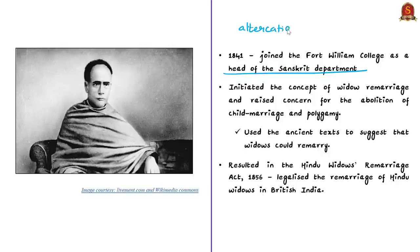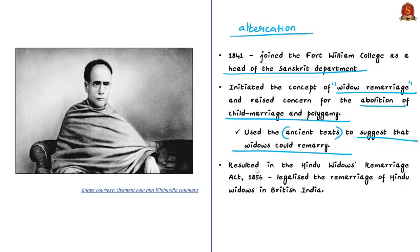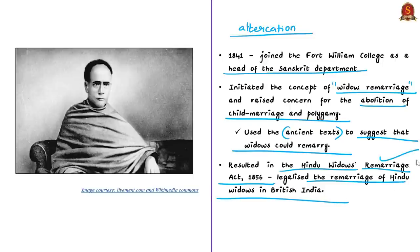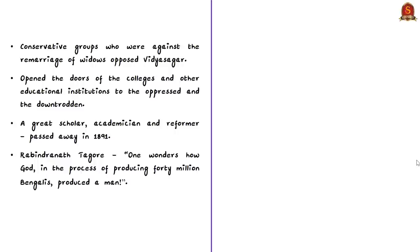He is also known for initiating the concept of widow remarriage and raising concerns for the abolition of child marriage and polygamy. He used ancient texts to suggest that widows could remarry. His suggestion was adopted by British officials, and a significant result was that a law was passed in 1856 permitting widow remarriage — the Hindu Widows' Remarriage Act of 1856, which legalized the remarriage of Hindu widows in British India. At the time of its implementation, the Governor General of India was Canning. Even after this, the number of widows who actually remarried remained low, and those who married were not easily accepted in society by conservative groups, who continued to oppose the law and even boycotted Vidya Sagar.